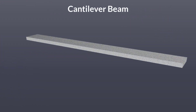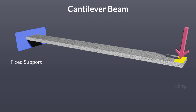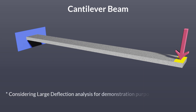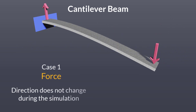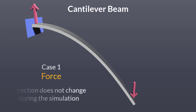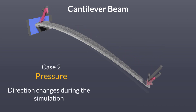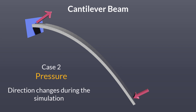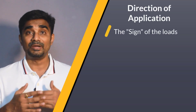Let us consider a simple case of a slender cantilever beam. It is fixed at one end and on the other end we have a small face to apply load. For the first case, we will apply force at the tip, and for the second case, we will apply pressure. Though our focus is on small deflection simulations for this course, we will use large deflection analysis here to differentiate these cases visually. For the case of force, we can see that the force reaction at the supports is constant throughout the analysis — it is equal and opposite to the applied force. For the case of pressure, we can see that the force reaction at the base changes its direction through the analysis. Eventually, the direction of the force reaction remains equal and opposite to the applied pressure, which acts in the normal direction of the face.